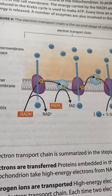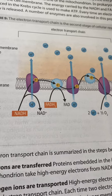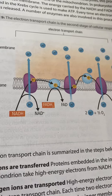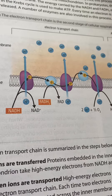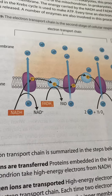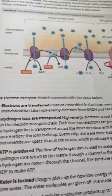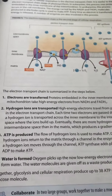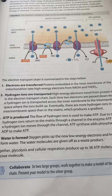NADH and FADH2 molecules produced in the Krebs cycle are used to make ATP. Every time an electron is transferred, energy is released. A number of enzymes are also involved in the process. The electron transport chain can be summarized in the steps below.